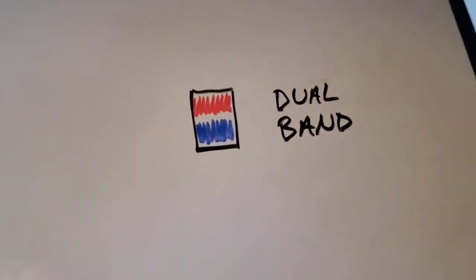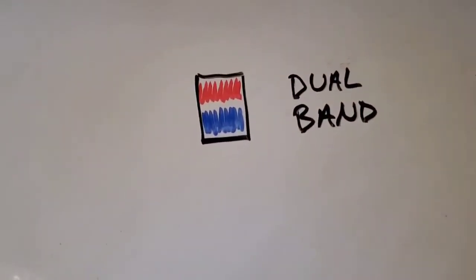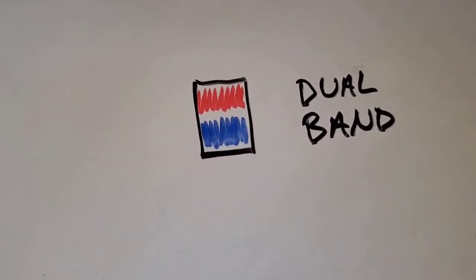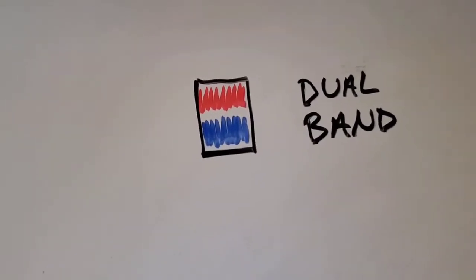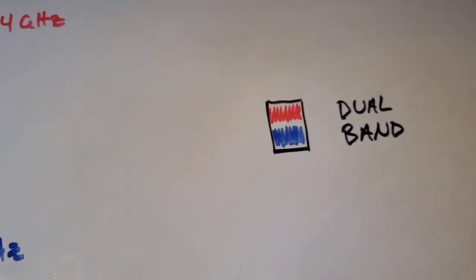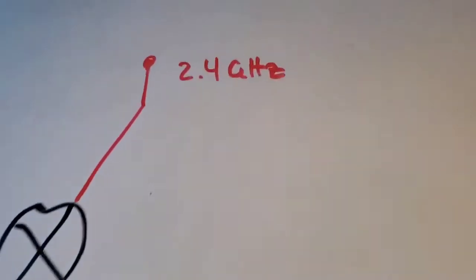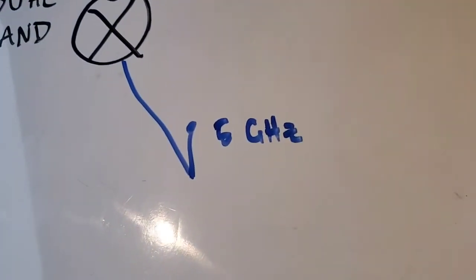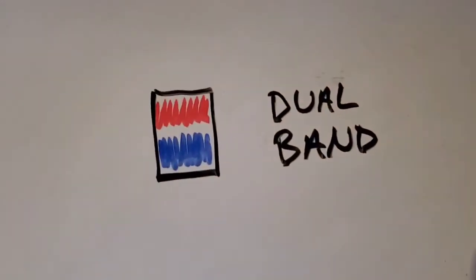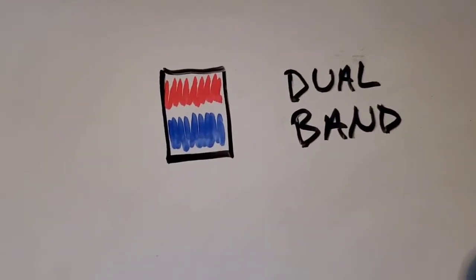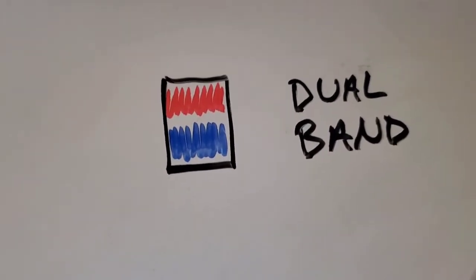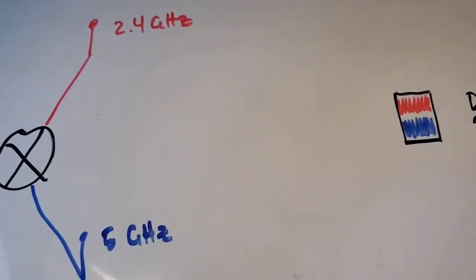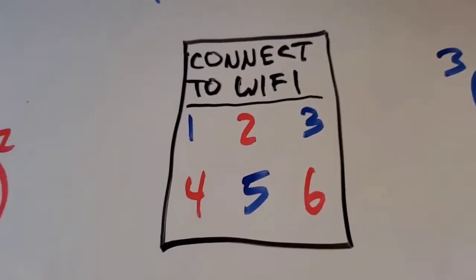The latest smartphones and tablets are also dual-band, meaning you can switch settings and the device will see both 2.4 gigahertz and 5 gigahertz networks. So you could have one network on 2.4 gigahertz and a separate Wi-Fi on 5 gigahertz, and a dual-band phone — such as the latest iPhone or latest Android — will be able to see both networks.